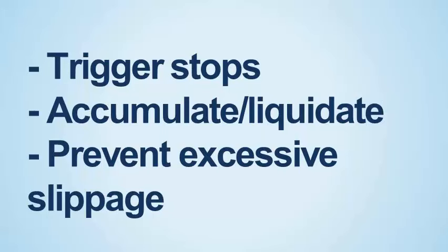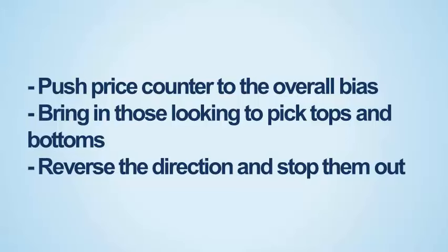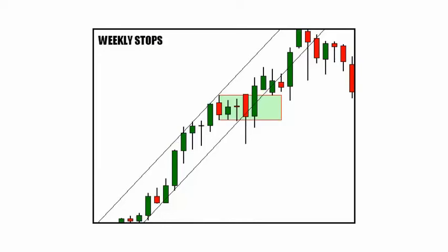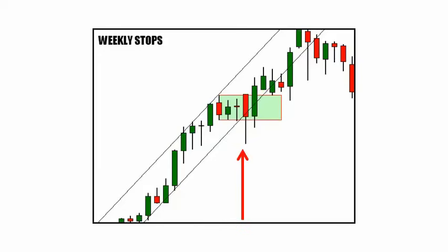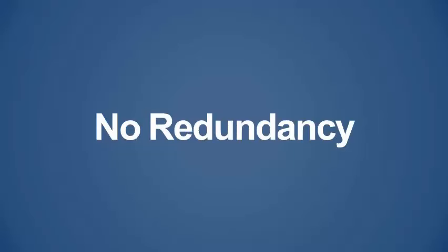The best place to do business for larger players is at areas where liquidity is added to the market. One good place is where a cluster of stops will likely be — they can trigger those stops, accumulate or liquidate, and prevent excess slippage. Another area is where counter-trend traders enter, pushing price counter to the overall bias, bringing in those looking to pick tops and bottoms, then reversing direction and stopping them out. The bigger players begin to accumulate at lower prices, their buying forces the market higher, causing counter-trend traders to panic exit, adding liquidity which the bigger players scoop up.